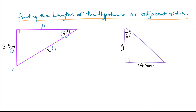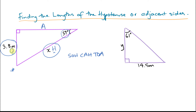Then what you should do is circle or highlight what you know. So we know the length of the opposite side. Also circle or highlight the length of the side that you're trying to find — so I'm trying to find x. Once you've circled what you know and what you're trying to find, you can see that you've got the opposite side and the hypotenuse side. So the trig ratio that you will be using — using the acronym SOH-CAH-TOA — we look for the trig ratio that uses O and H.